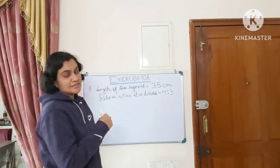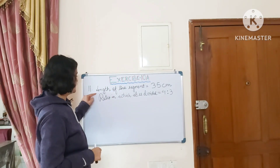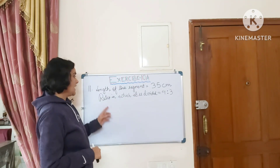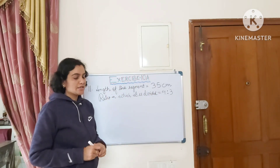Question number 11 asks: a 35 centimeter line segment is divided into two parts in the ratio 4 is to 3. We need to find the length of each part. Given: length of line segment is 35 centimeters and the ratio in which it is divided is 4 is to 3.